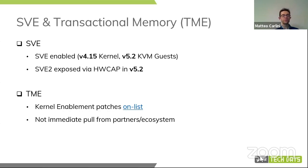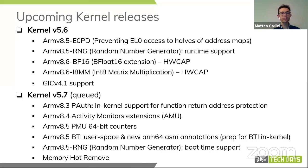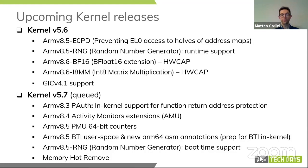Taking a broader look at what's coming in the next kernel versions: 5.6 is almost closed, and for 5.7 most features are already queued. In 5.6, there are four new architectural features enabled. One is 8.5 E0PD — preventing EL0 access to halves of address maps. As I mentioned earlier, the random number generator runtime support has been enabled in 5.6, and we already have patches for boot-time support using RNG, which are queued for 5.7.